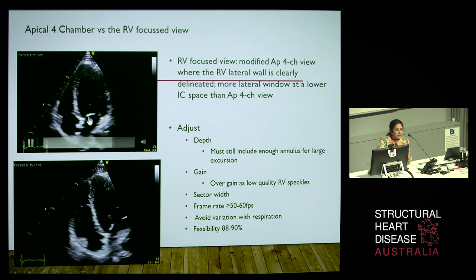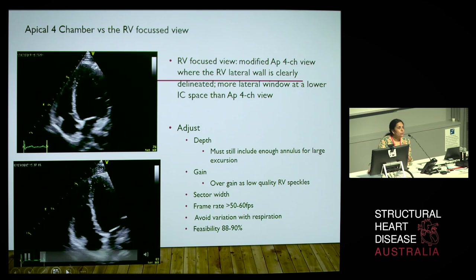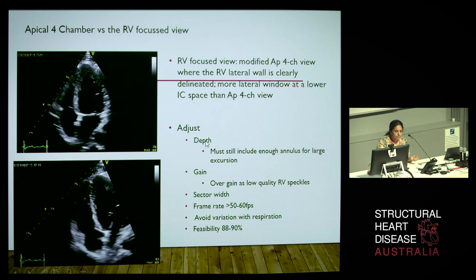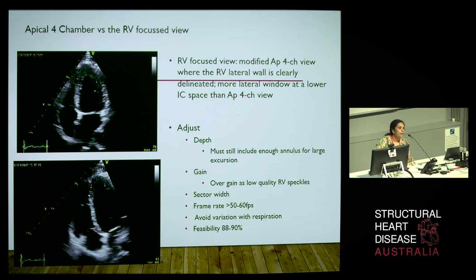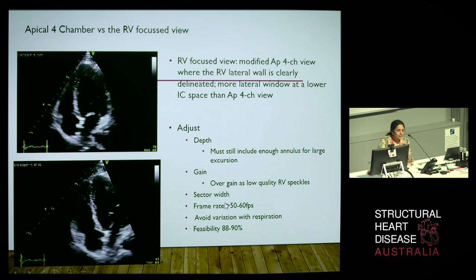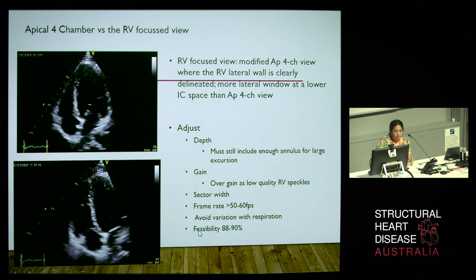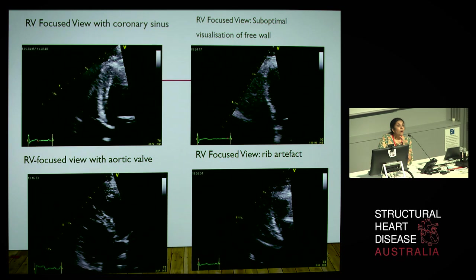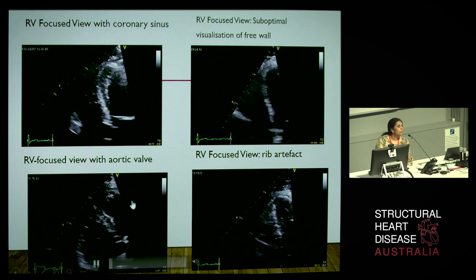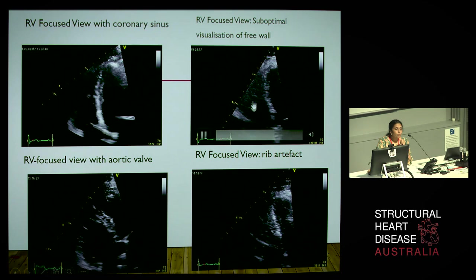This is a standard apical four-chamber view, but if you measure strain, you'll have difficulty tracking out laterally at the apex as compared to an RV focus view, which we get by moving down and laterally. The key is to get to the RV apex — you need to adjust depth, make sure you get the whole annular excursion, you may overgain a little bit, and adjust your sector width to get a good frame rate and avoid respiratory variation. With practice, feasibility is about 90%. Avoid non-standard views and use landmarks like the coronary sinus or aortic valve — we don't want to see them in the RV focus view. Images with suboptimal quality or rib artifact will give erroneous 2D strain measurements.